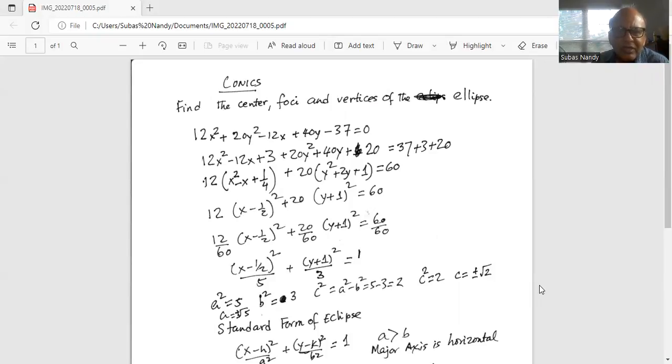Similarly, for the second term plus 20, this is y plus one whole square equal to 60.